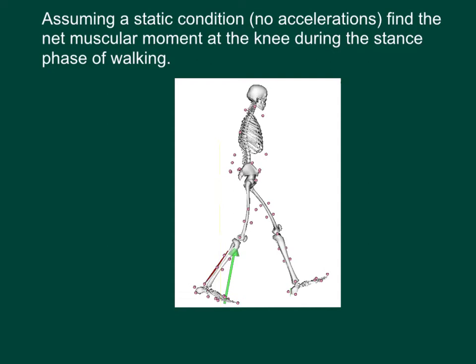In this video we are going to determine the net muscular moment at the knee during walking. We are going to assume that this is a statics problem, that is that there are no accelerations of the foot or the shank. This is a pretty good assumption during the stance phase of walking.